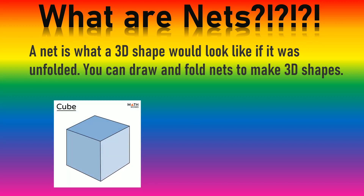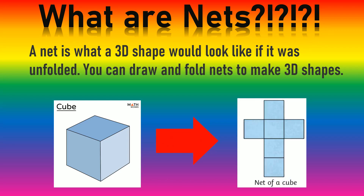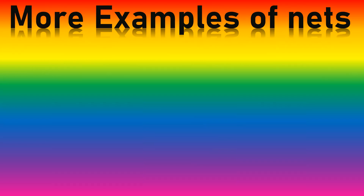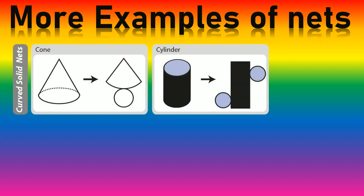A cube — and after growing some Harry Potter magic, it turns into this. This is a net of a cube. So these are more examples of nets. These are a cone, a cylinder, and these are some more nets, which I sadly couldn't find the 3D equivalent of.